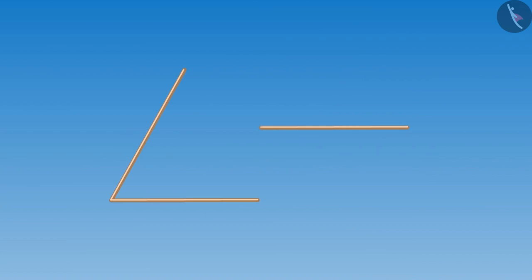Now look here, if I join another stick to these two sticks, then a triangle is formed. Can you tell me now how many corners and how many angles are present?